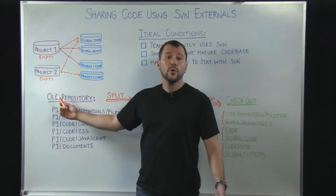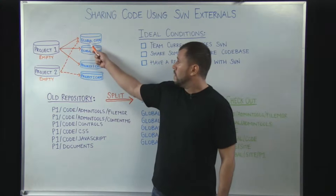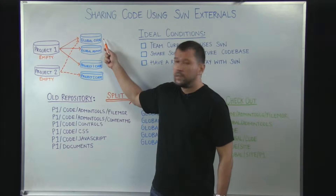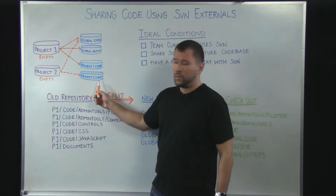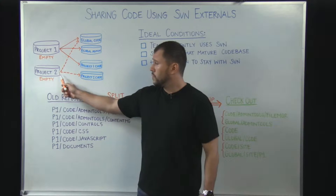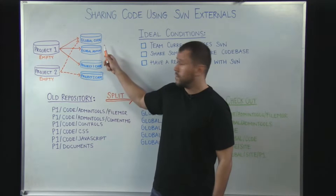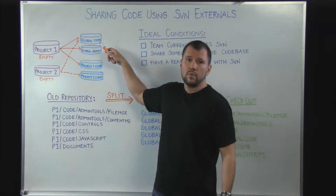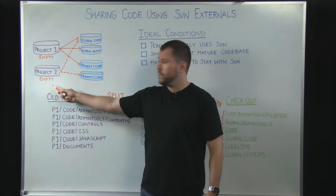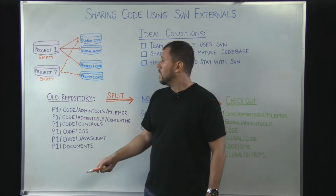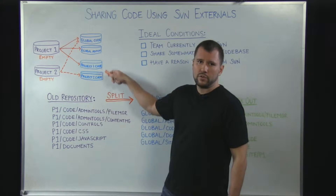Similarly, I have project two, also an empty repository, also referencing one of the repositories in the architecture and the project two code repository. This project two repository is choosing not to bring over global admin components from my pool of external repositories. So as you can see, you can have any number of repositories referencing any number of components that you choose to configure.